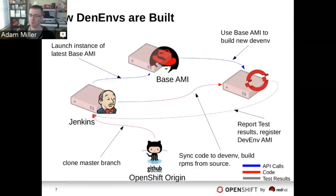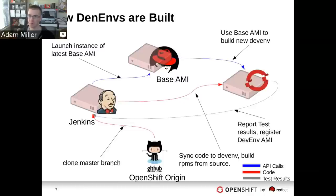The build workflow also runs a number of unit tests, integration tests, and Cucumber tests, reporting results so that only known-good images are registered for developers to launch as development environments. This is important because if a bad commit sneaks past our bots and testing — perhaps missing a test case in the merge testing — these tests ensure development environments are in a known-good state so developers don't start with a broken environment.